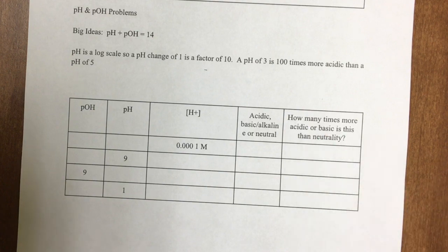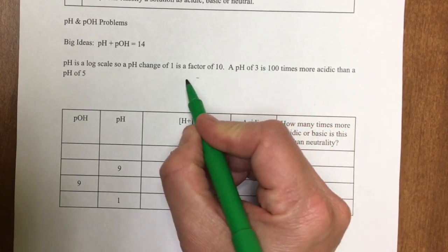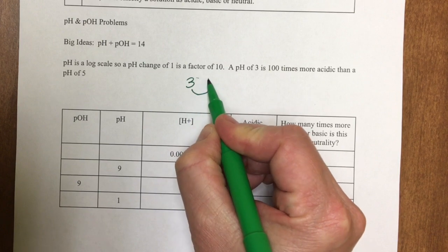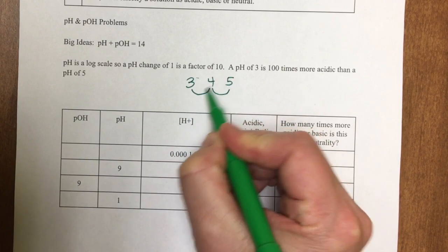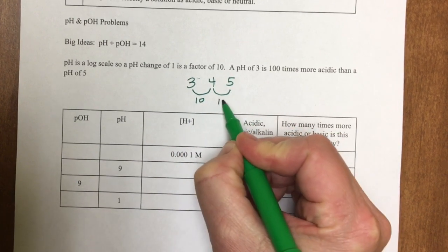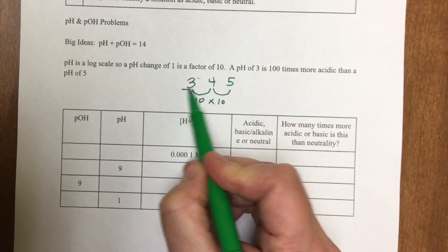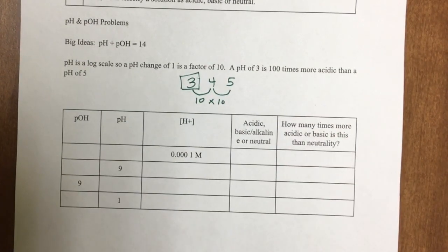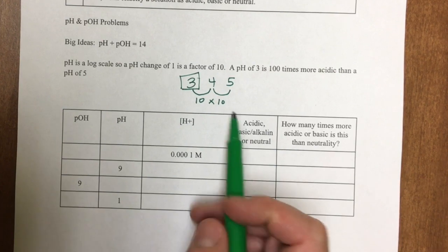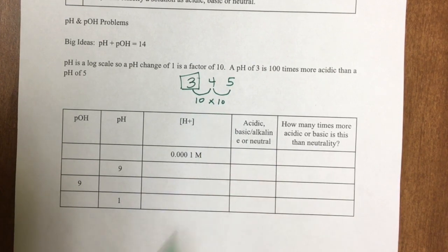To go from a pH of 3 to a pH of 5, I go from 3 to 4, then 4 to 5. Each step is a factor of 10. So pH of 3 is not two more acidic, it is 10 times 10, which is 100 times more acidic than pH of 5.